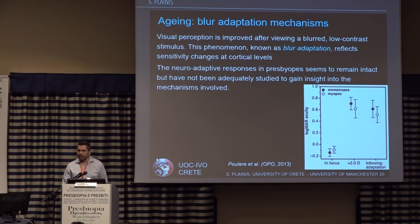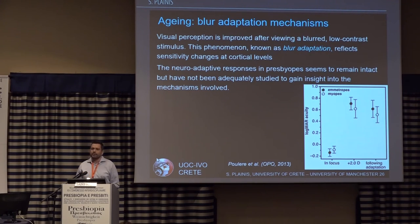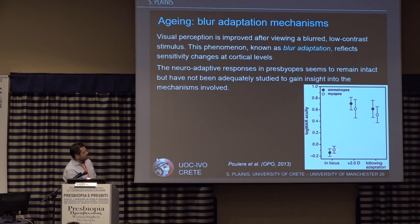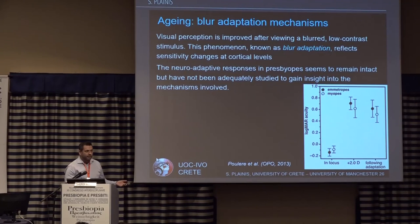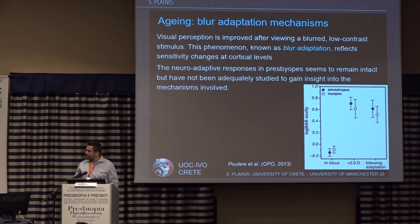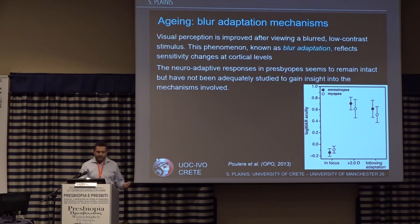Another area requiring further investigation is blur adaptation. When we remove our glasses, we cannot see very well at first, then performance slightly improves. When subjects were made effectively two diopters myopic, their visual acuity decreased, but after an hour of adaptation there was an improvement of about one line — this is called blur adaptation. Some studies show that blur adaptation is not greatly affected by aging, but there are not many studies clarifying this, so it needs to be studied better in the future.